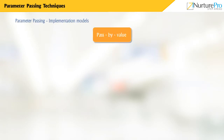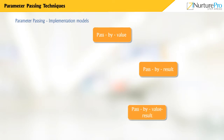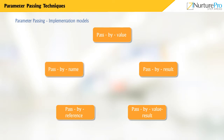The common methods for parameter passing are: Pass by value, Pass by result, Pass by value-result, Pass by reference, and Pass by name. Let's understand each of these methods.